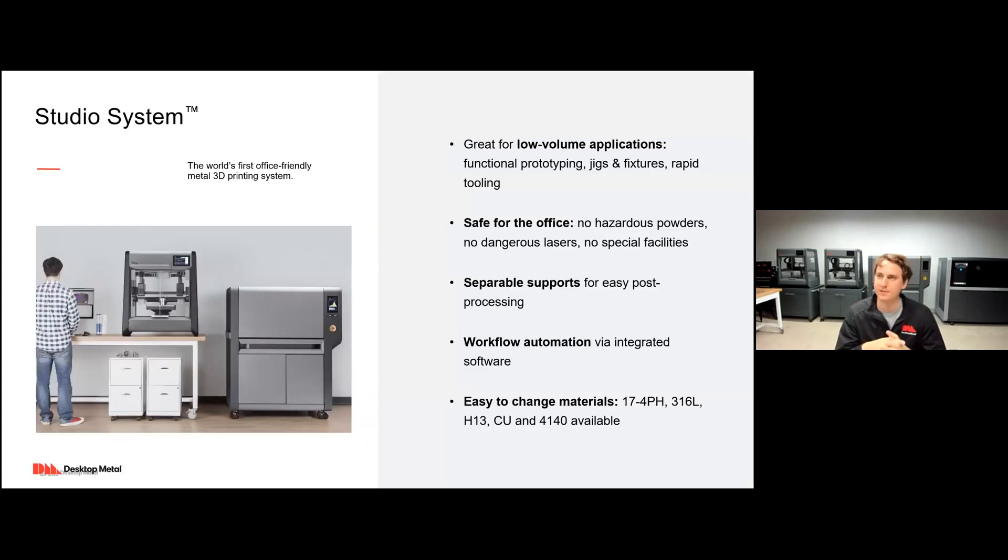We'll be talking about this in terms of binder jetting and the ability to mass produce print parts on demand without tooling to replace those parts that you were traditionally casting. The two printers we're going to be talking about today, both of course produced by Desktop Metal, is the Studio System. Studio System is right behind me, you can see here, the world's first office-friendly metal 3D printing system. It's great for those low volume applications like I mentioned as the complement, functional prototyping, jigs and fixtures, rapid tooling, replacement parts. It's very safe for the office, it's fully automated workflow and has quite a few materials available to it to help you with no matter what application you have.